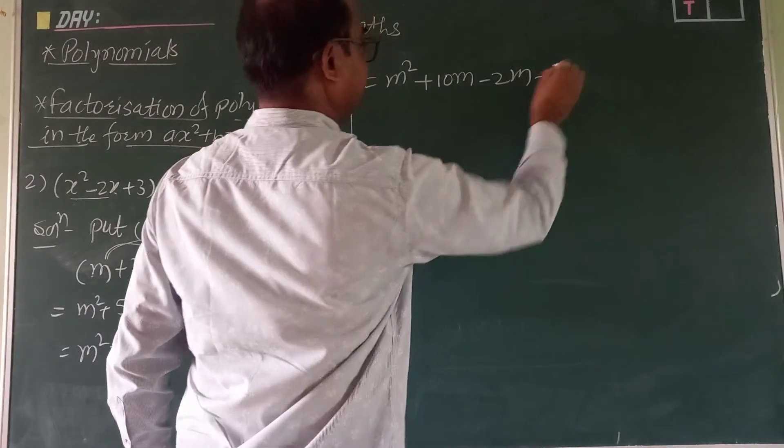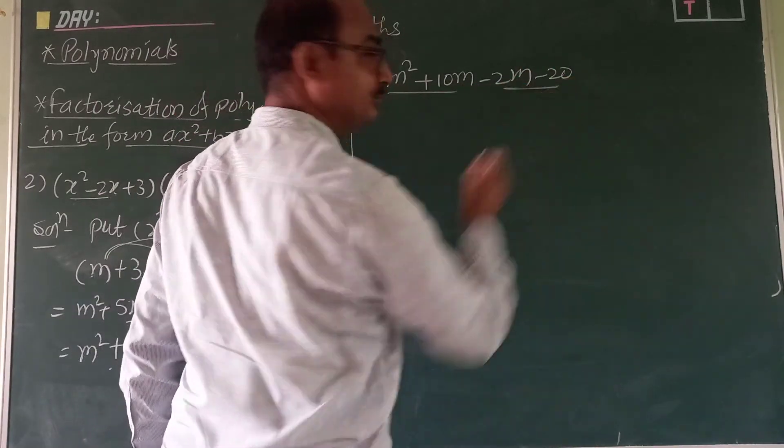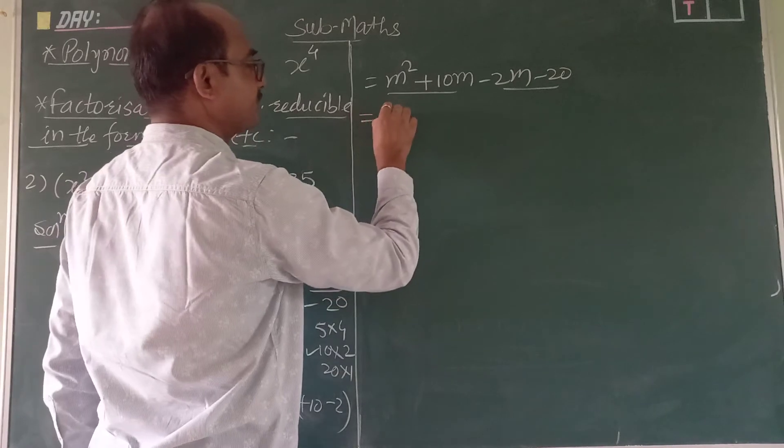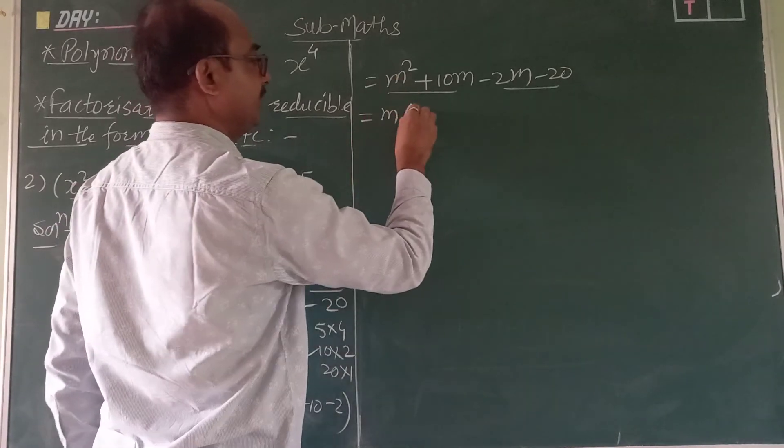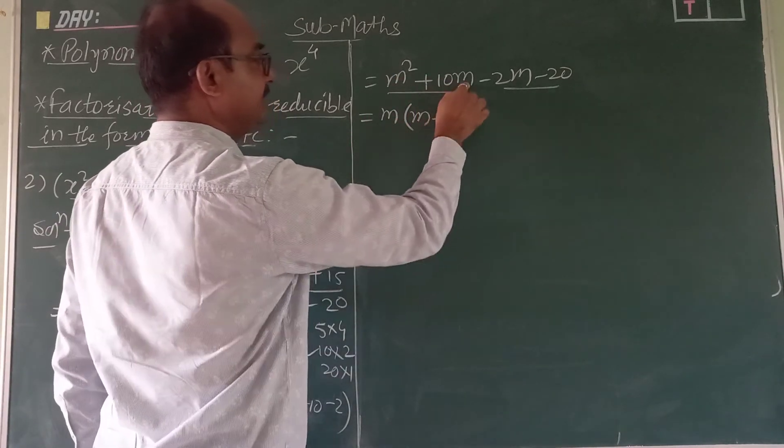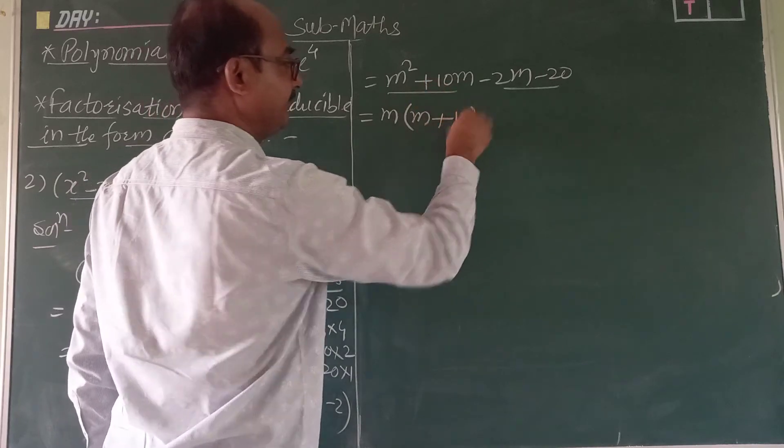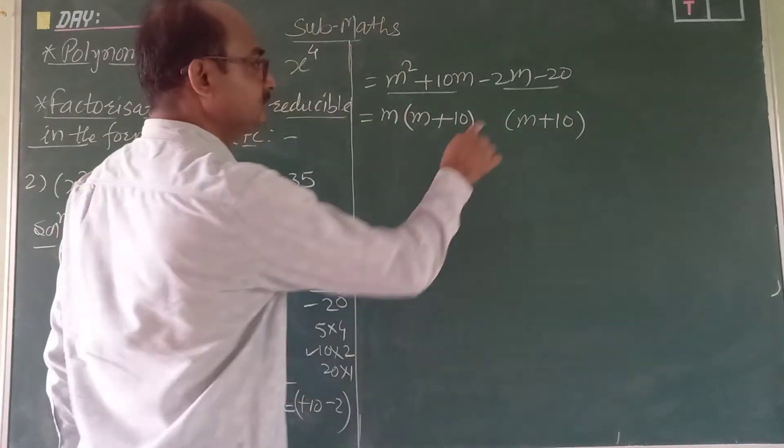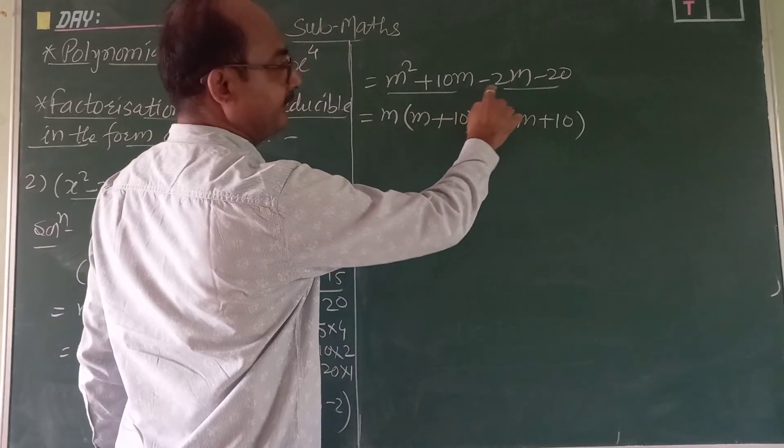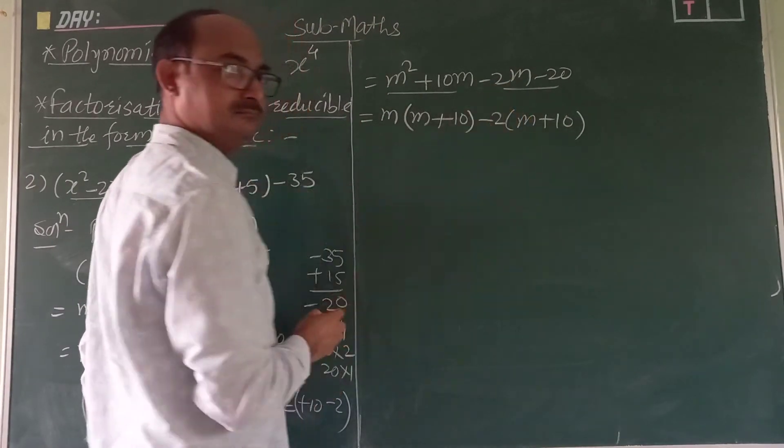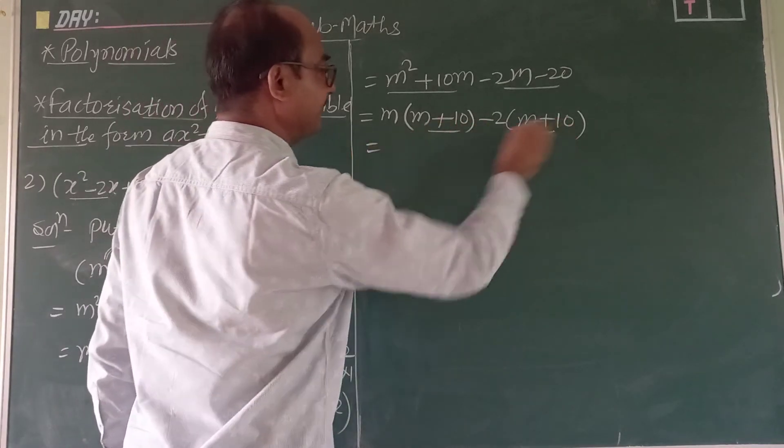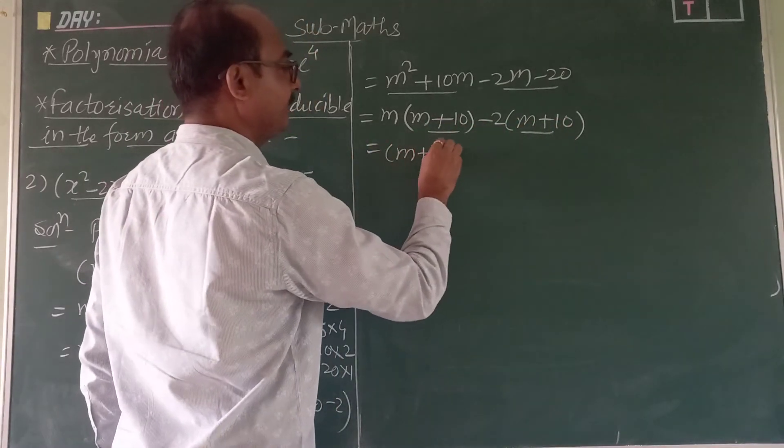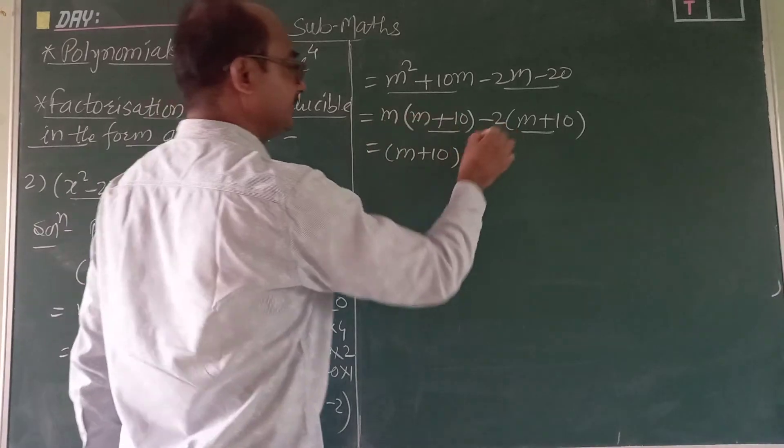So write factor: m squared, instead of this 8m you have to take this number plus 10m minus 2m, and last number is minus 20. So take this number from these two. Here m is common, so here m remains, plus sign, m outside, 10 remain same, bracket should be there.